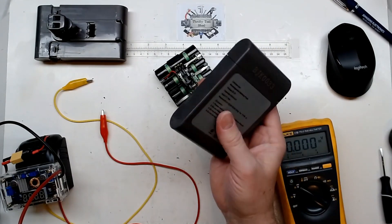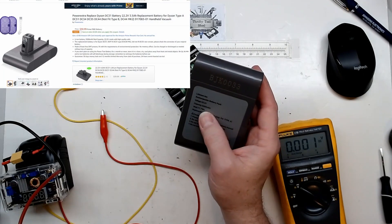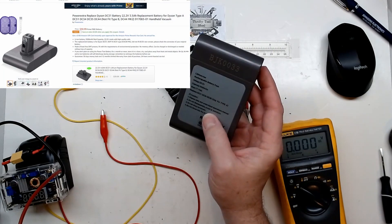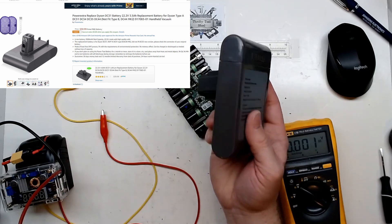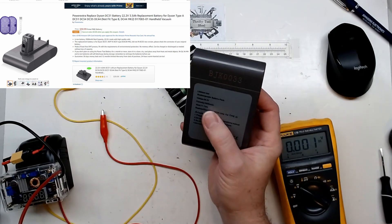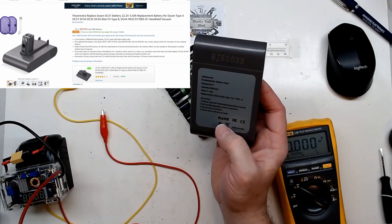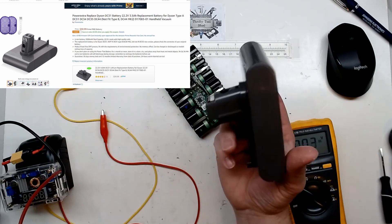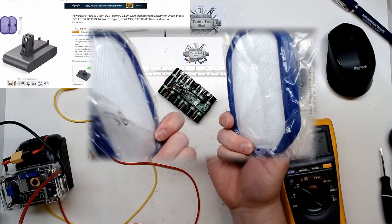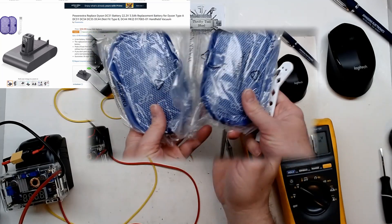And this is actually a 3500 milliamp hour. Of course I haven't tested to make sure it is the 3500 milliamp hour cells in it, but it says it's an upgrade and it comes with two filters as well for around 30 dollars.